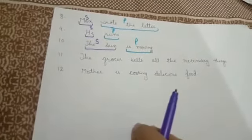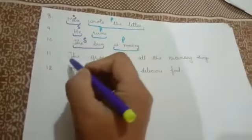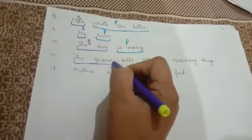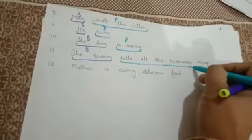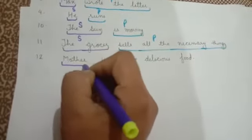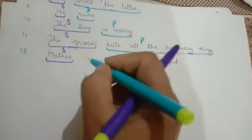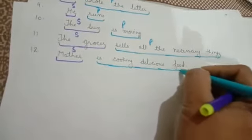'The grocer sells all the necessary things.' The sentence is talking about the grocer. So 'the grocer' is the subject. And what is the action? Selling the necessary things. So this is the predicate. Next: 'Mother is cooking delicious food.' Here mother is the main noun, so this is the subject, and 'is cooking delicious food' is the predicate.